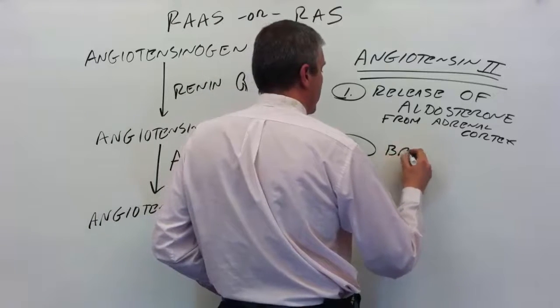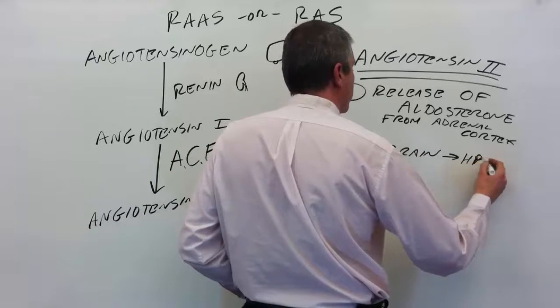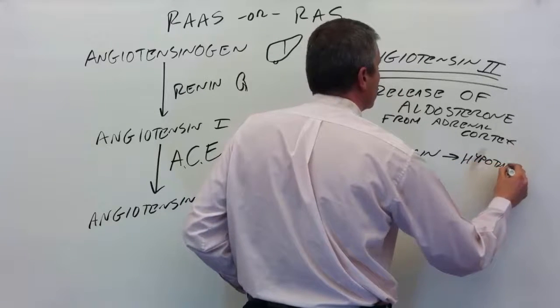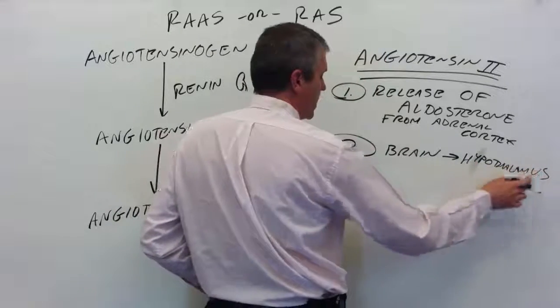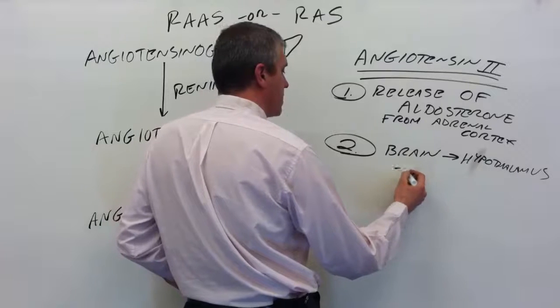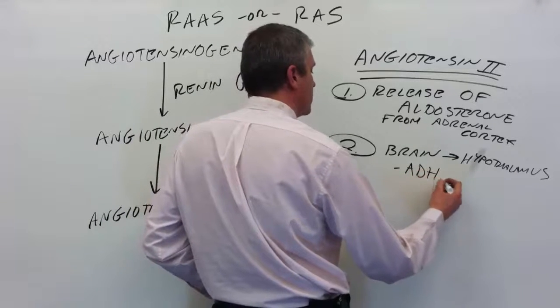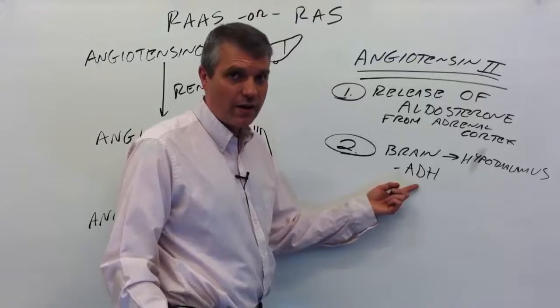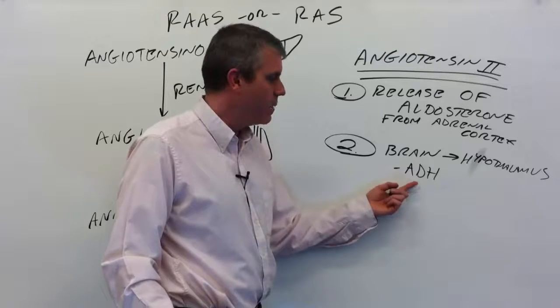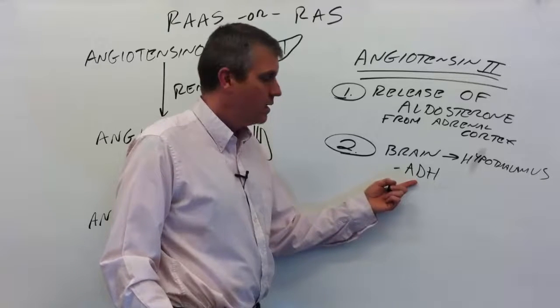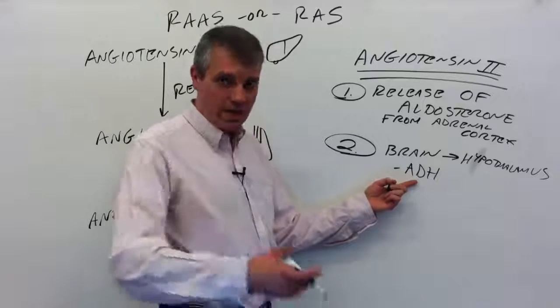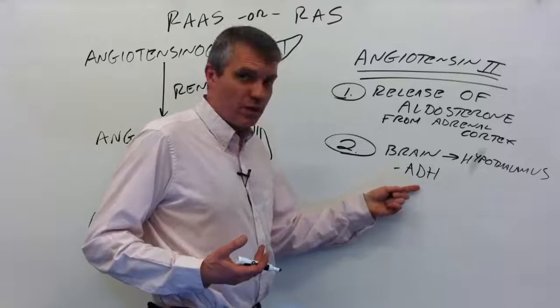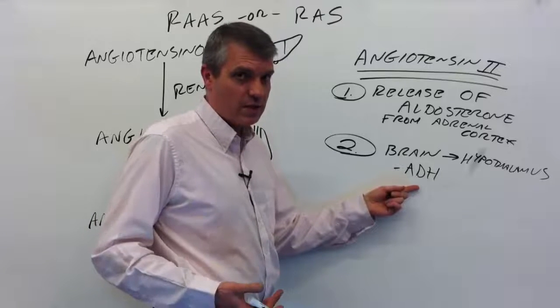Angiotensin II goes up to the brain, specifically the hypothalamus, and it does two things. It causes ADH to be produced and released. ADH is made in the hypothalamus but released by the posterior pituitary gland. So we've got the endocrine system coming in now. ADH stands for anti-diuretic hormone. Anti-diuretic hormone causes the kidneys to retain water, so we don't pee out as much water. We keep more water in the body. That will increase blood volume.